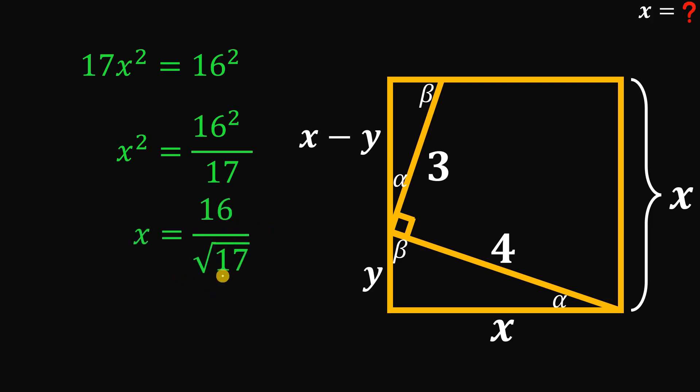We have x equals 16 over square root of 17. Now rationalize this number because we don't want radicals on the denominator. So multiply the numerator and denominator by square root of 17. So x is just 16 multiplied by square root of 17 all over 17.